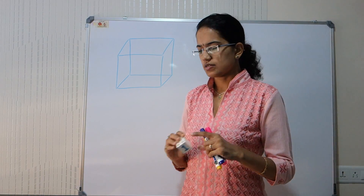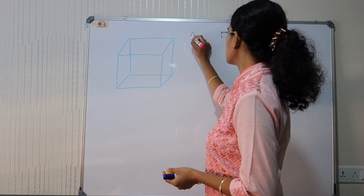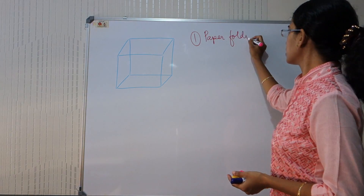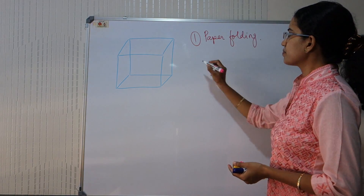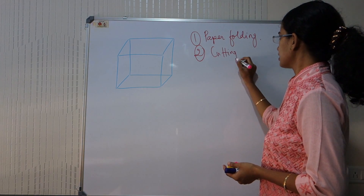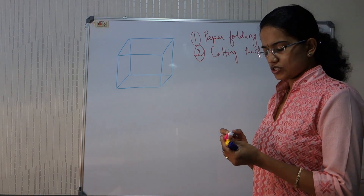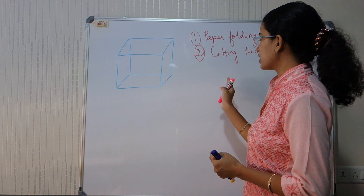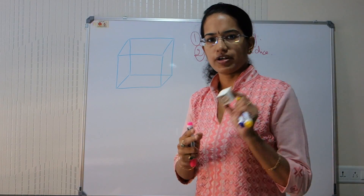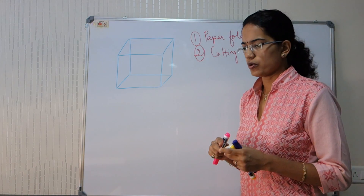Most of the dice problems that are asked are basically focused on 2 things. First is paper folding experiments, and second is cutting the dice into multiple pieces. So let's first do the exercise when we are cutting the dice into multiple pieces. Assume that I have a dice in my hand, and I am dividing this dice into 64 pieces.